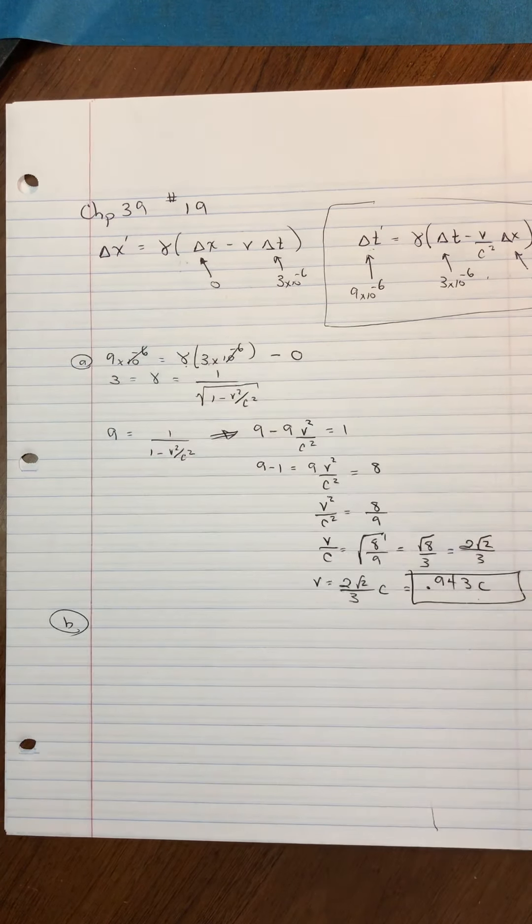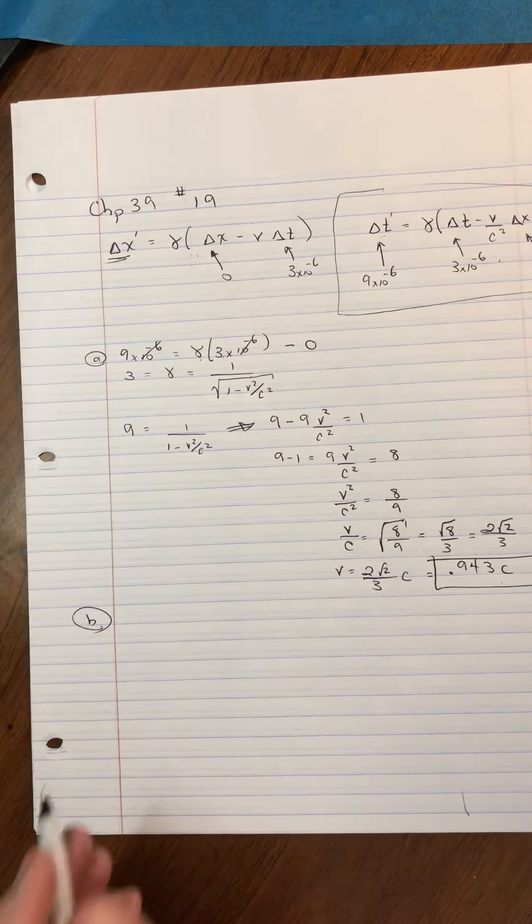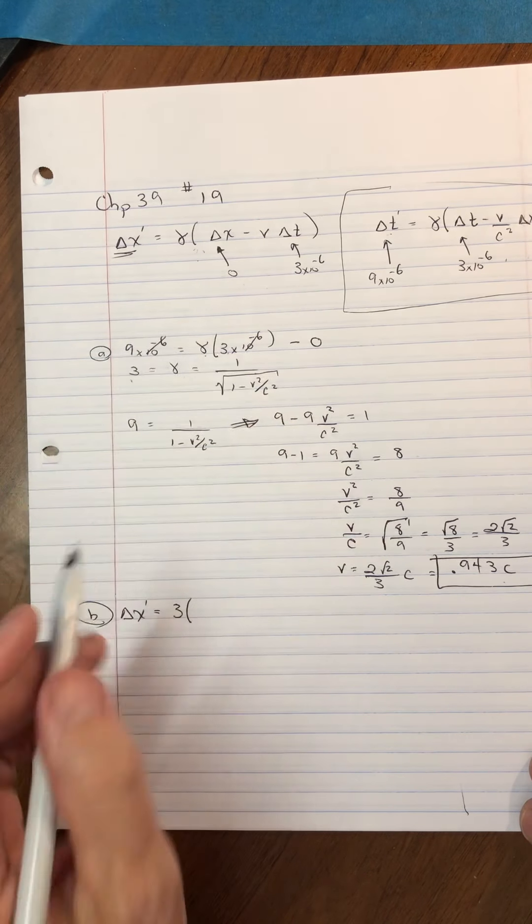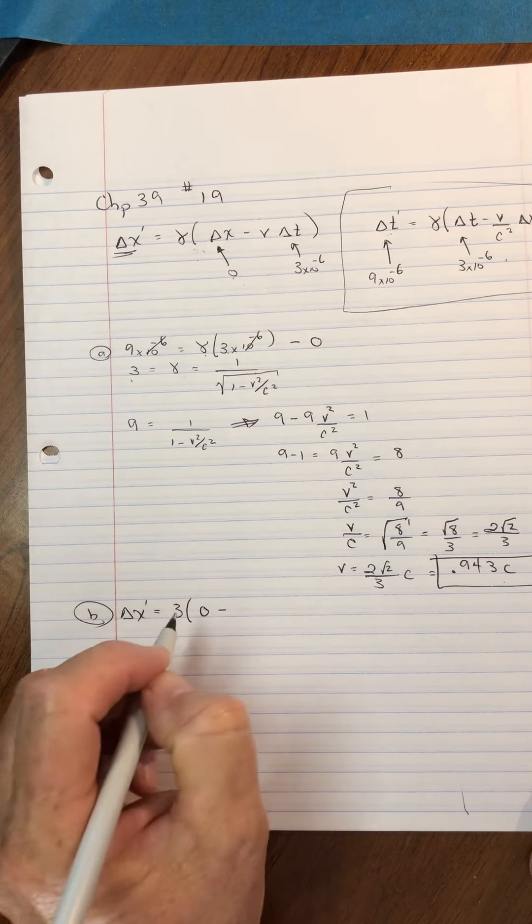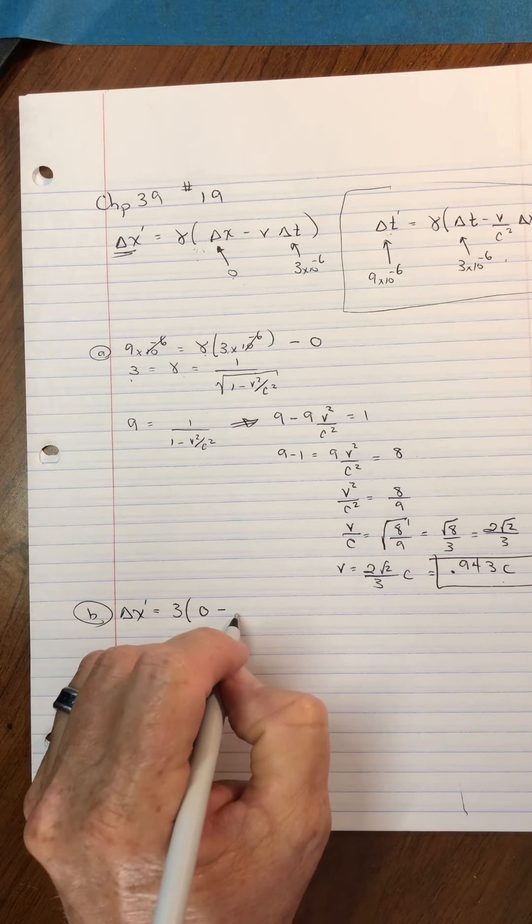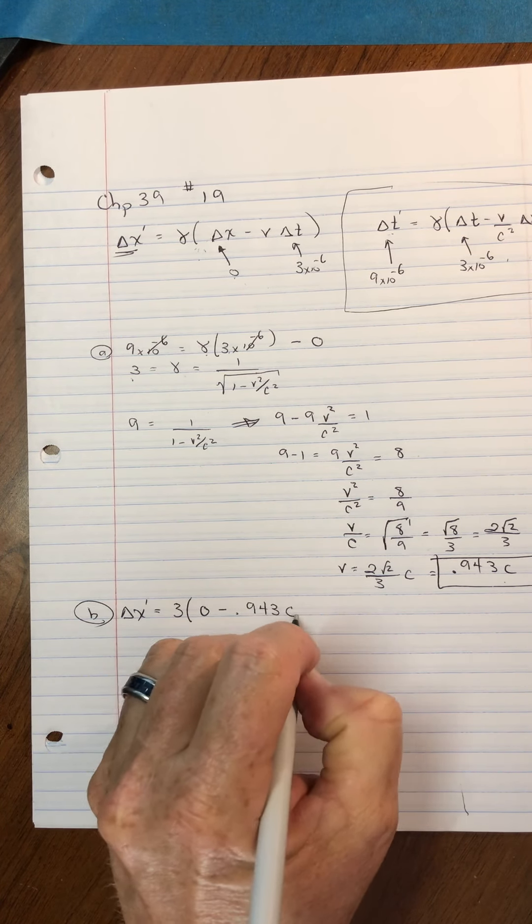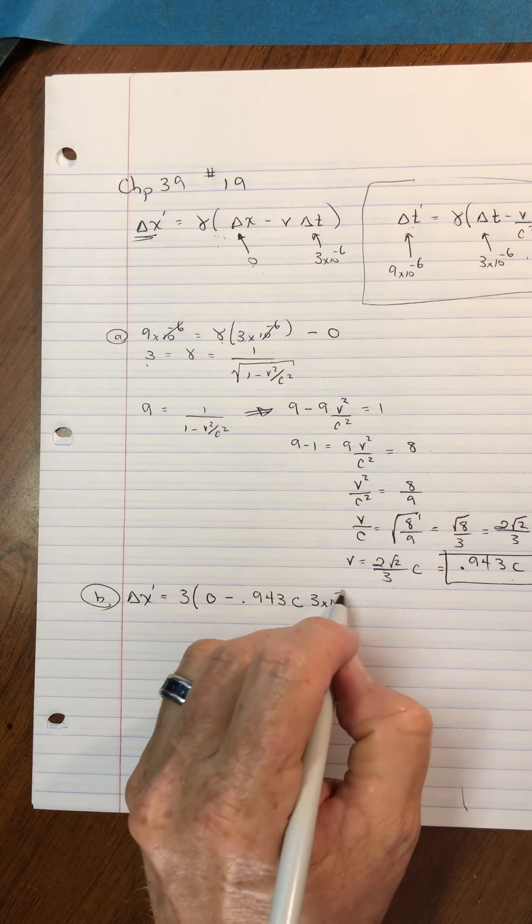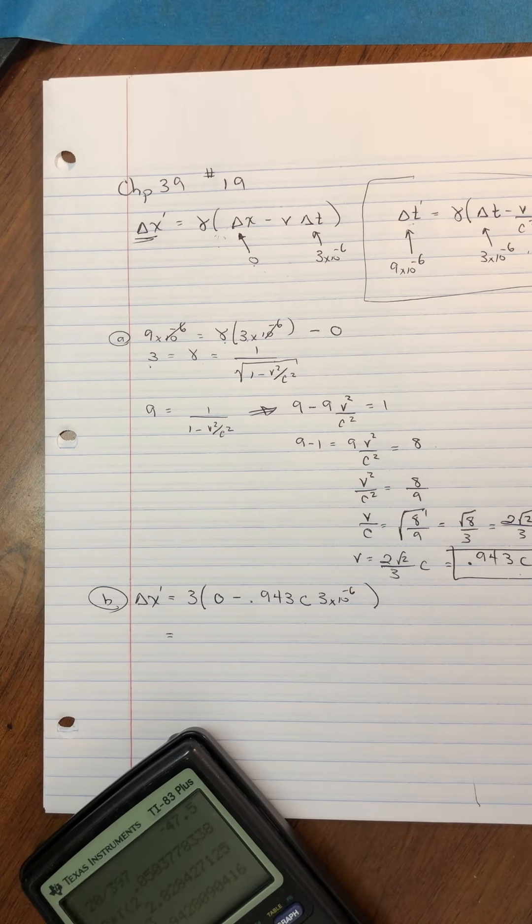And then the second part of b, I think, comes back to this equation here. Let's see what it says. It says, according to Mark, what is the separation in space? Yeah, so we're trying to find that. All right, so let's find this delta x prime. And so the first is gamma. And earlier on, we said gamma was three. So I'll use that. And, of course, earlier on, we also said the spacing between them, as viewed by Suzanne, is zero minus. And then the velocity looks like we have 0.943c. And the spacing, the time difference, is this.